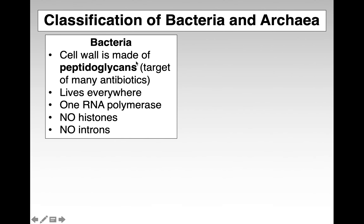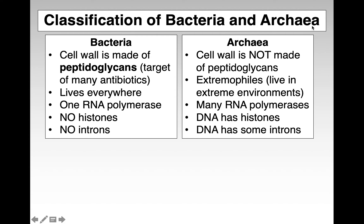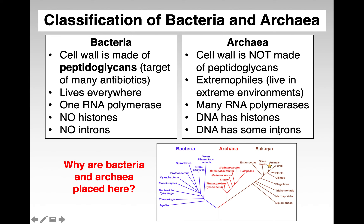So bacteria: the cell wall is made of peptidoglycans, which is a target of many antibiotics. They live everywhere. They have one RNA polymerase, no histones, and no introns. Archaea, on the other hand, are still prokaryotic, but they have a cell wall not made of peptidoglycans. They are extremophiles. They have many RNA polymerases, histones, and introns. This is why bacteria is on its own branch and archaea and eukaryotes share a more recent common ancestor.